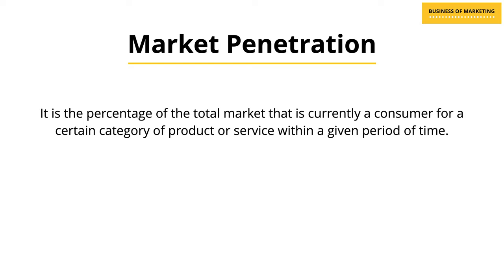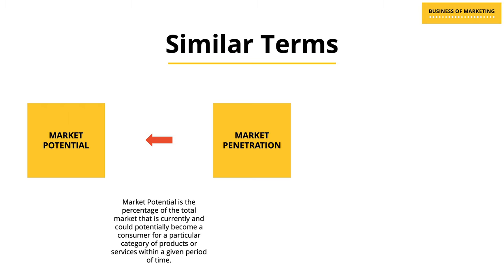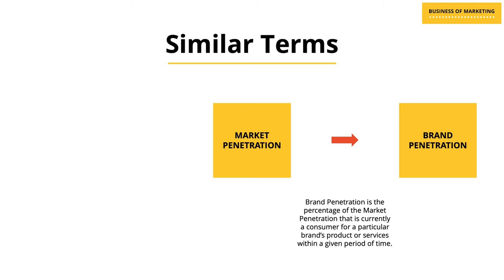There are a couple of similar terms, so please don't get confused. The first is market penetration — the number of customers of a particular brand or category currently. The next is market potential: when we talk about market potential, we are referring not just to current customers or consumers, but also potential customers or consumers you can have in a particular market. The other related term is brand penetration. Market penetration refers to the entire category, but brand penetration means the penetration for that particular brand, which is a part of the category penetration.